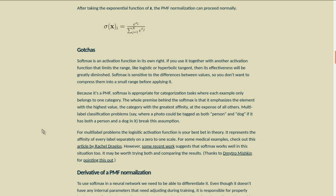For multi-label problems, the logistic activation function is your best bet in theory. It represents the affinity of every label separately on a zero to one scale. For some medical examples, check out this article by Rachel Drelos. However, some recent work suggests that softmax works well in this situation too. It may be worth trying both and comparing the results. Thanks to Dimitro Mishkin for pointing this out.